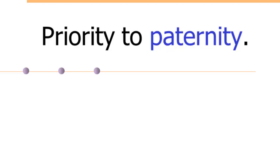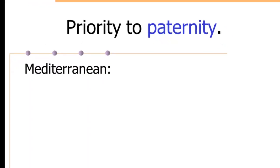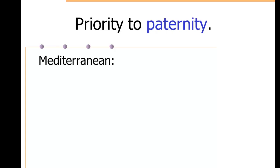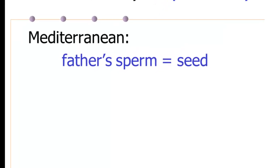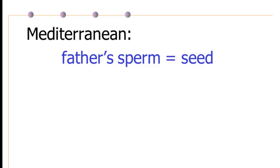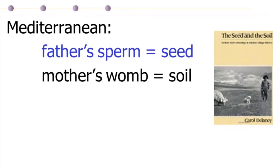This may seem puzzling, actually, given how difficult it can be to determine paternity. But it's actually the most common system found in human societies. One area where this was very common was in the Mediterranean. And a metaphor throughout the Mediterranean area equates the father's sperm to seed from which the child is grown. And the mother's womb, then, is simply the soil in which the seed is planted.